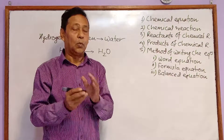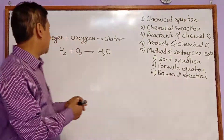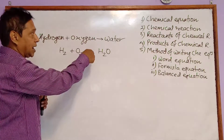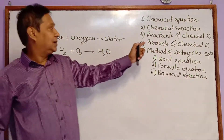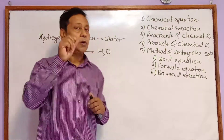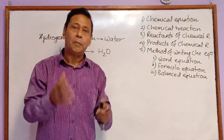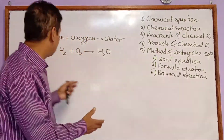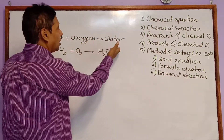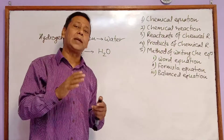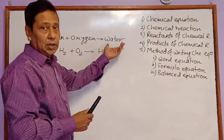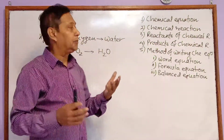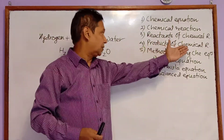The elements or compounds which take part in a chemical reaction are called reactants. In this chemical reaction, hydrogen and oxygen are taking part, so they are the reactants. The element or compound which forms after the chemical reaction is called the product. In this reaction, water is formed — that is the product. A product may be one, two, three, or more. Here the product is just one — water. The product is essentially the result of the chemical reaction.